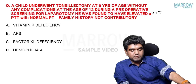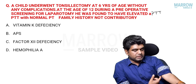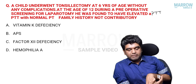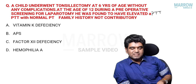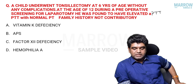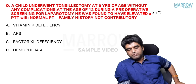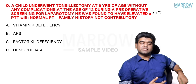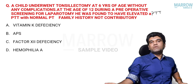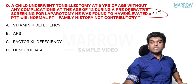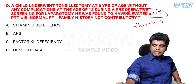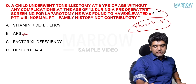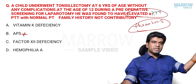Now to the second question. The child underwent tonsillectomy at age 6 without any complication — no bleeding. At age 12, pre-operative screening showed elevated APTT with normal PT, family history not contributory. You would never mark APS as the answer because to call something APS you need both clinical and lab criteria. There is no clinical criteria here, and lab criteria must be positive twice over 12 weeks — not mentioned here either.